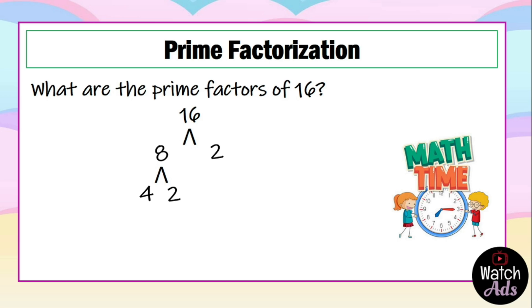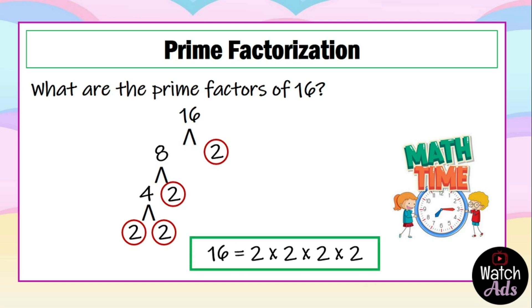We factor out 4. We have 2 factors: 2 and 2. Now we end up with prime factors. Let's write down our answer: 16 is equal to 2 times 2 times 2 times 2. And that is our final answer. And if we are going to compare with our previous solution, we still end up with the same answer.